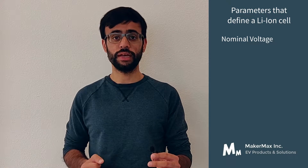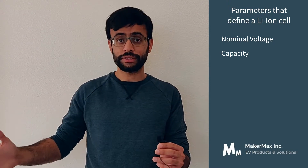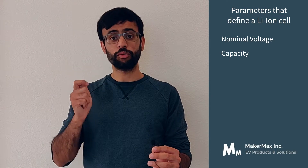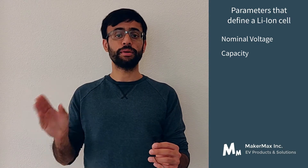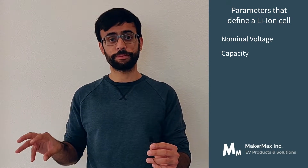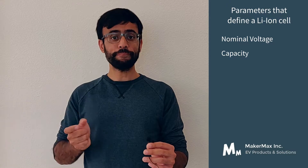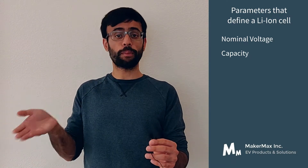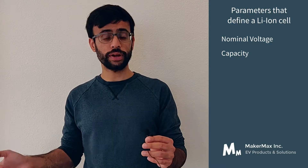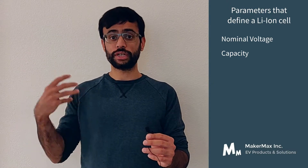The second parameter is the capacity of the cell, which describes how much charge can be stored inside the cell when it's fully charged. Capacity is measured in ampere hours (Ah) — a multiplication of amps and hours. For example, a cell with a capacity of 2 ampere hours means you can discharge it at 2 amps for 1 hour, or 1 amp for 2 hours, or 0.5 amps for 4 hours. That multiplication of amps and hours gives us the charge inside the cell.